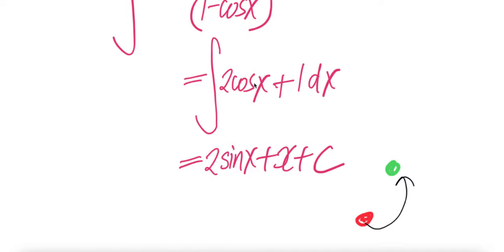Integral of this with respect to x is 2 comes out. And then integral cos x dx is sin x. Integral dx is x plus c. Done.